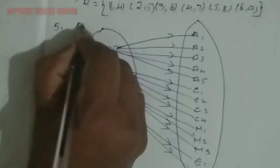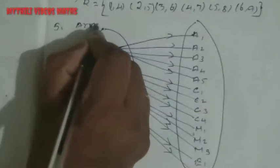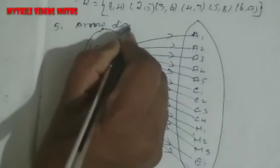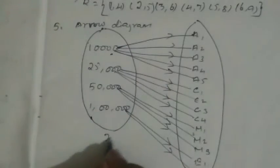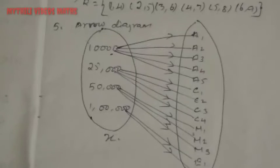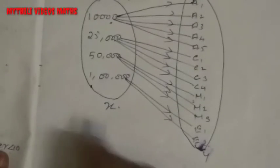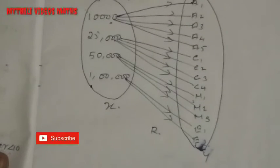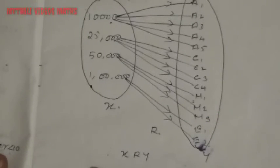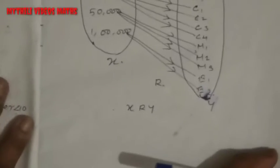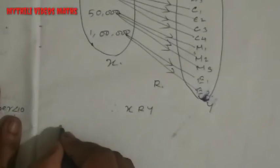So this is the arrow diagram. We can say this is X in relation, X and Y. This is the relation. We can say therefore X is the relation of Y. Second, we have to write the relation.